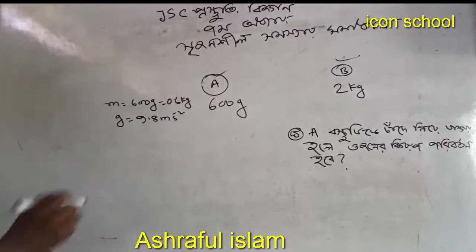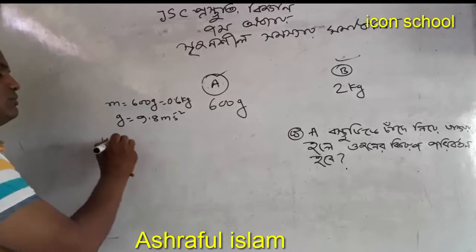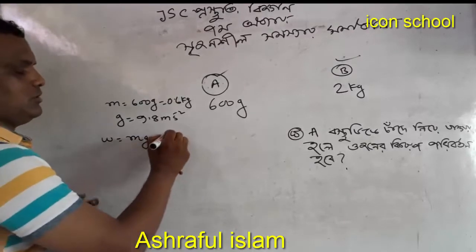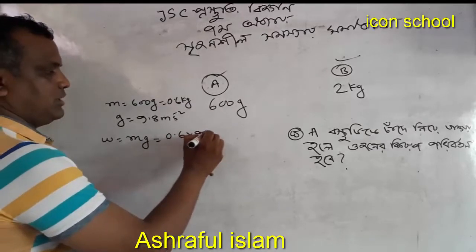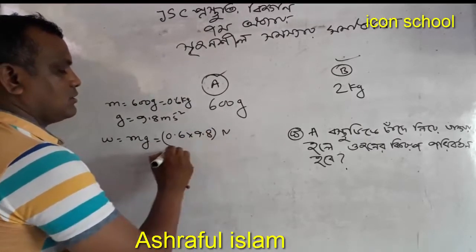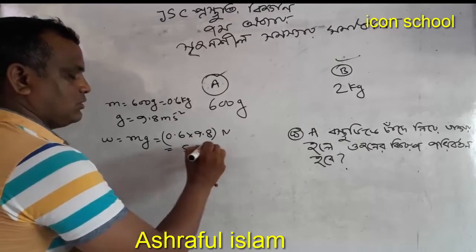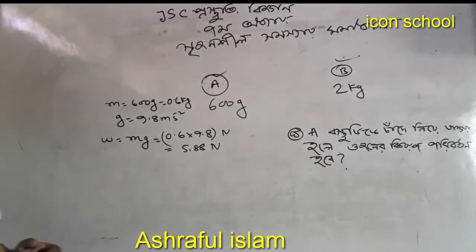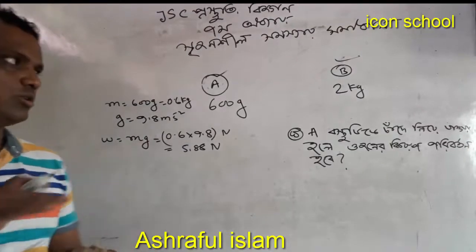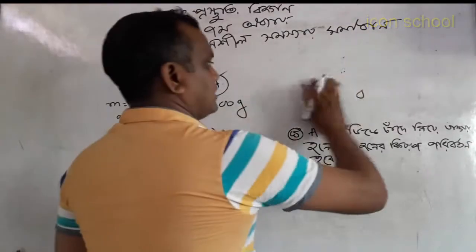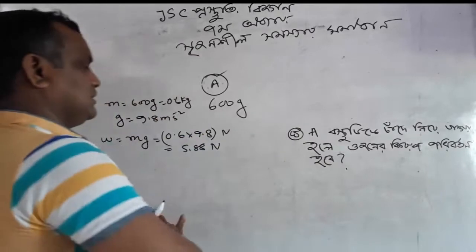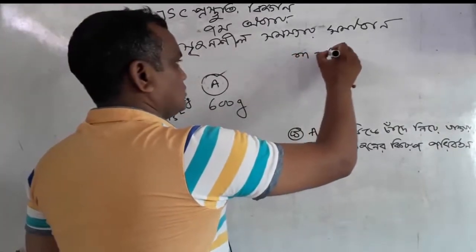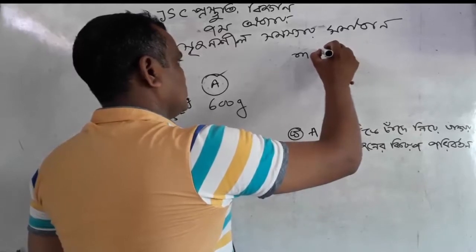W1 equals mg. M1, M1, which is 0.6 times 9.8. How does it look? How do you think it depends on Newton's test? M1 is 0.6 kg.